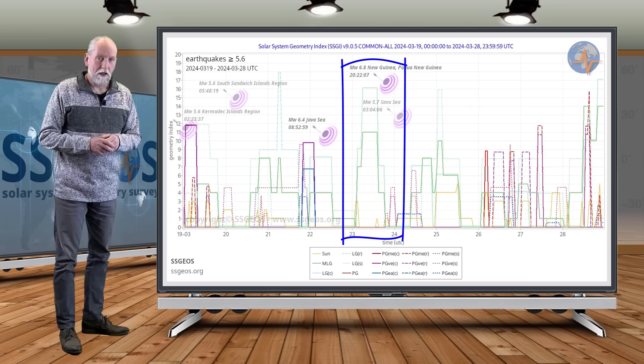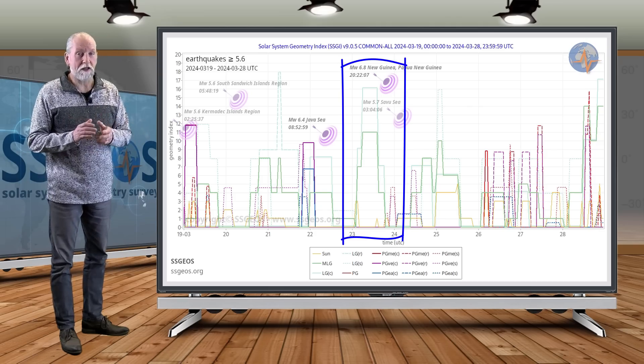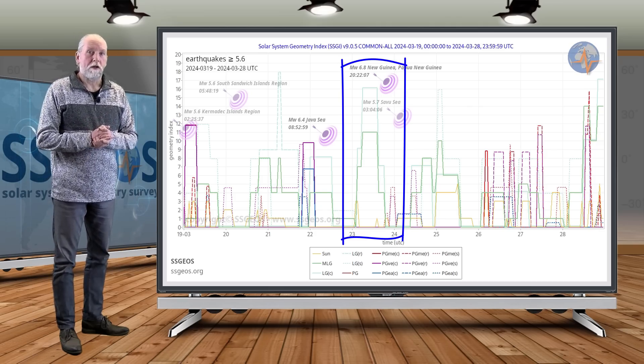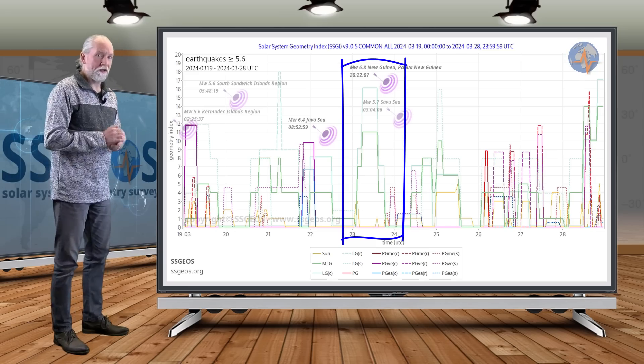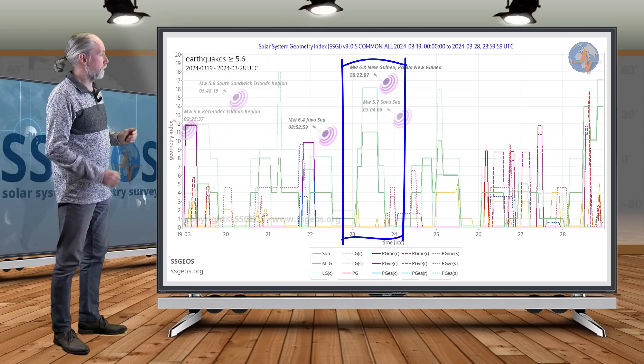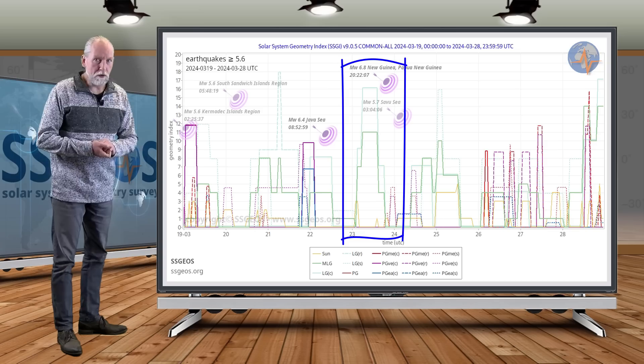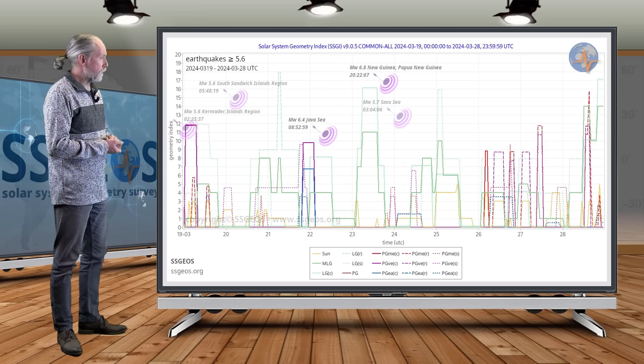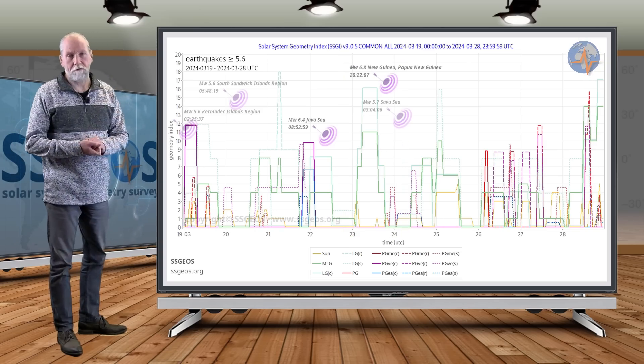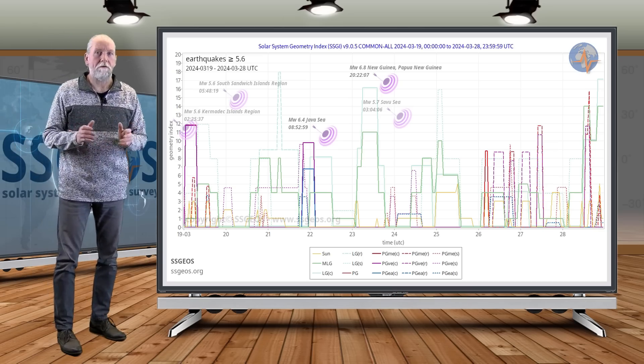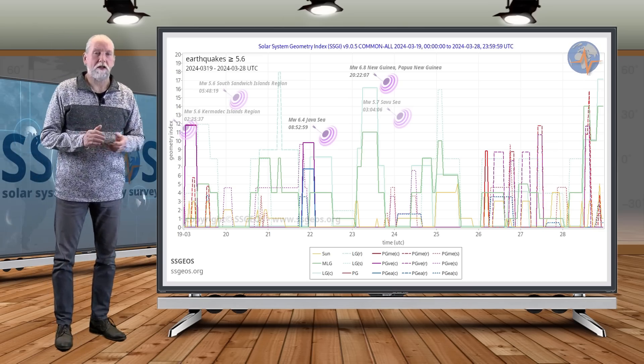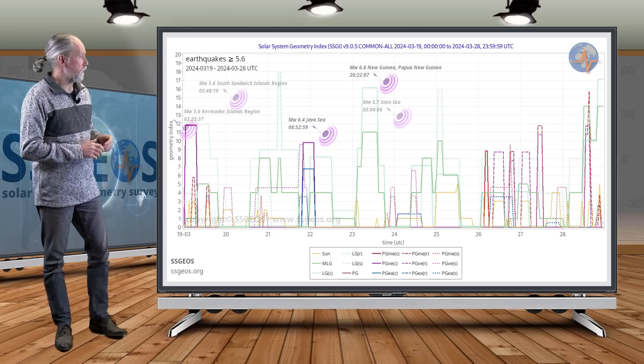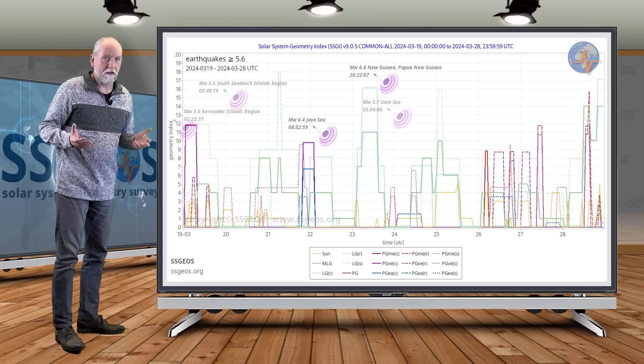Then we see the high lunar peak in the middle. This is a conjunction or two conjunctions involving Venus and Saturn. I specifically mentioned that lunar geometry because I considered it more critical, and indeed we see just following that lunar peak a 6.8 at New Guinea and also 5.7 early on the 24th. Other than that, we did not have considerable or significant seismic activity. It was a relatively quiet period.